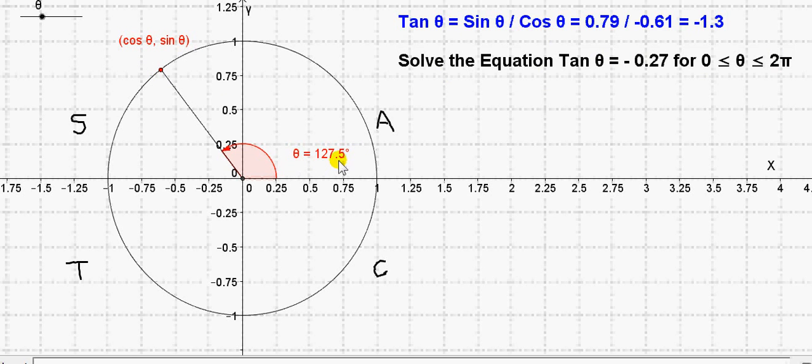In this case, θ is 127.5 degrees. We can see that the sine of 127.5 degrees is 0.79. We can see that the cos of 127.5 degrees is minus 0.61. 0.79 divided by minus 0.61 gives us minus 1.3.